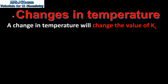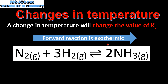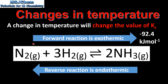Moving on to changes in temperature — here is a very important point. A change in temperature will change the value of the equilibrium constant Kc because Kc is temperature dependent. For the Haber process, the forward reaction is exothermic with an enthalpy change of −92.4 kJ per mole, meaning the reverse reaction is endothermic with an enthalpy change of +92.4 kJ per mole.